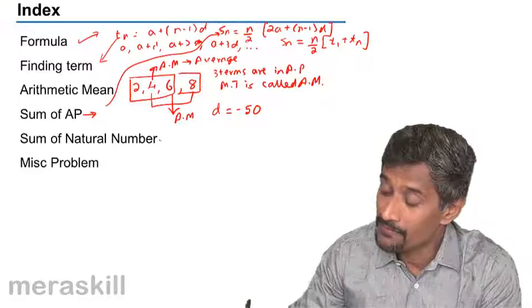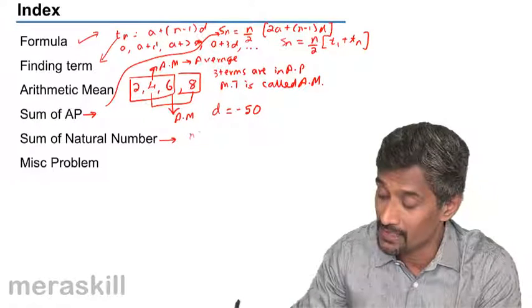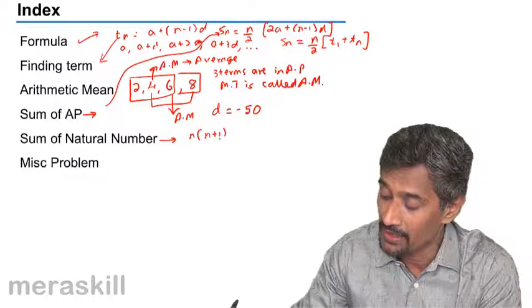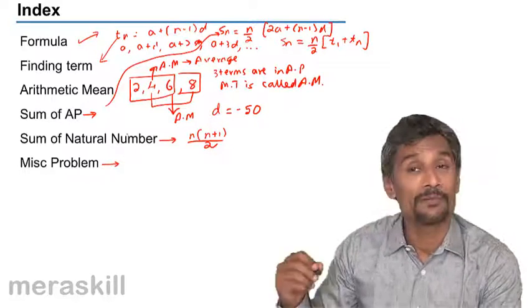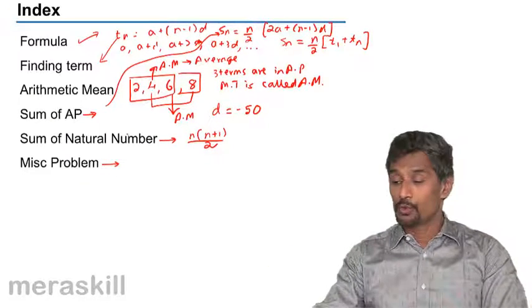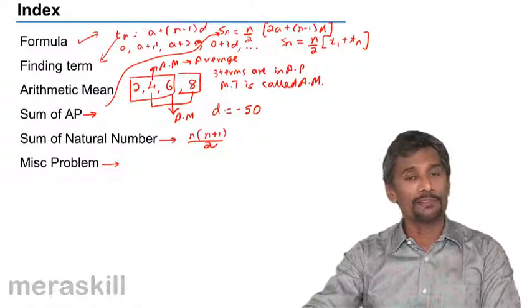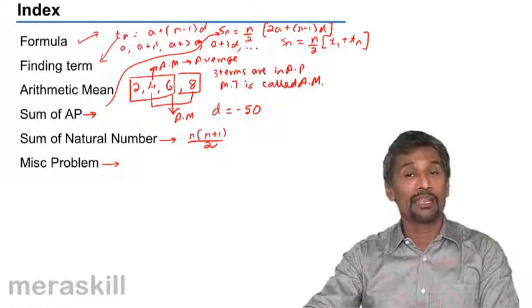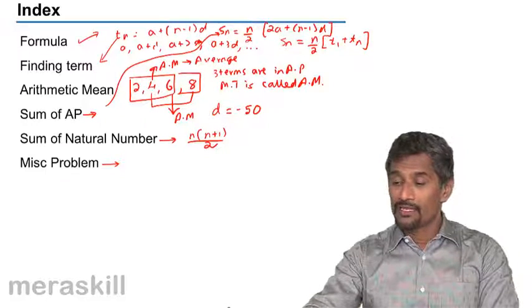Then sum of natural numbers. If we have the first few natural numbers, what would be their sum? Their sum will be n into n plus 1 upon 2. Then we'll be taking up miscellaneous problems based on arithmetic progression. We shall be covering these formulae so that you really are able to get it into your system. So let's go directly into it.